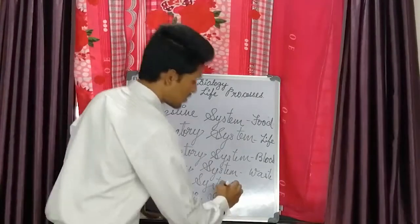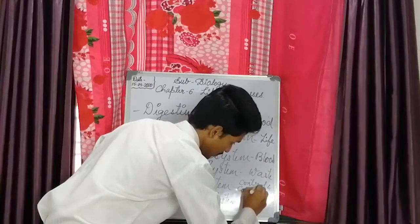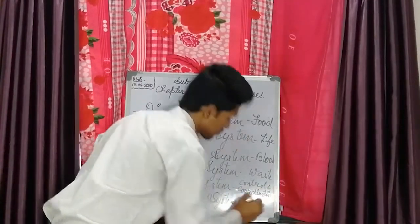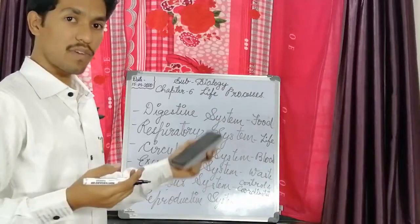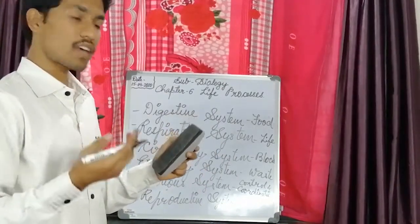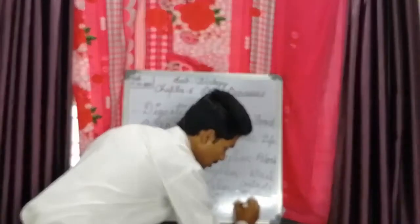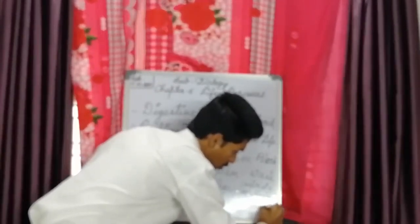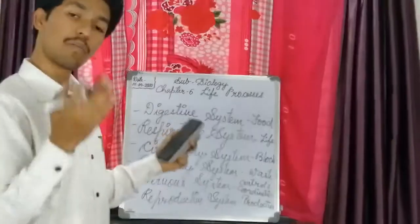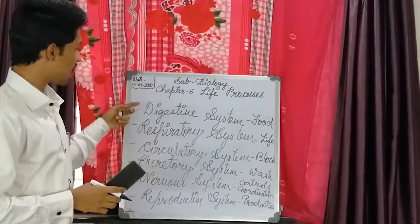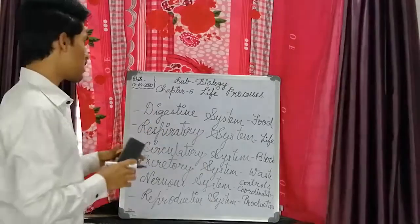Next is the nervous system, which does control and coordination — the whole control and coordination of our body, how our organs should work. We have the brain as the master gland, which helps the whole body to function properly. Next is the reproductive system, which means production of new individuals who are genetically similar to the parents. So the digestive system, respiratory system, circulatory system, and excretory system — these four systems we are going to study in this chapter.